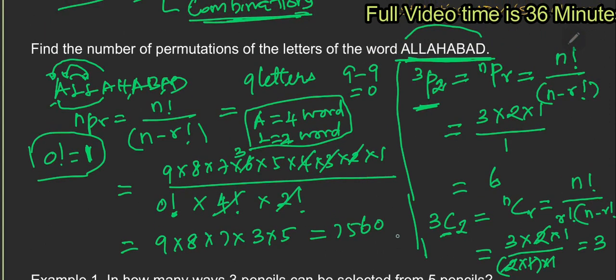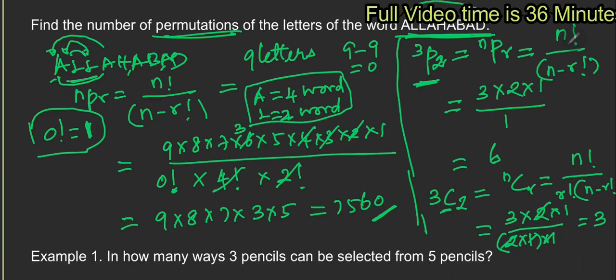So the formula is: n factorial divided by n minus r factorial. N factorial here is 9 into 8 into 7 and so on, and n minus r is 9 minus 9 = 0, giving 0 factorial = 1. Since some letters are repeated — A appears 4 times and L appears 2 times — we divide by 4 factorial and 2 factorial respectively, and that gives us the final answer.